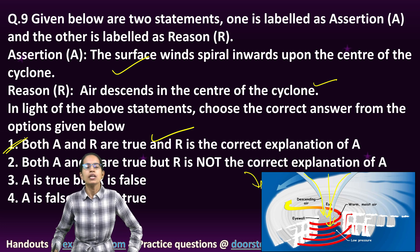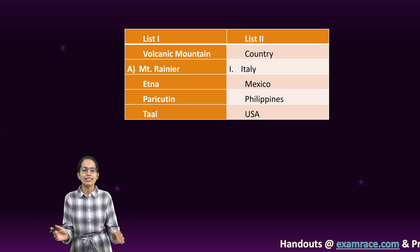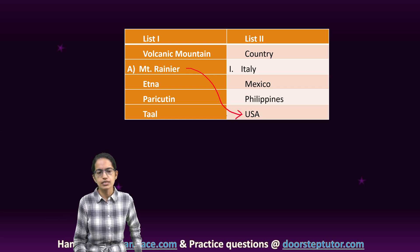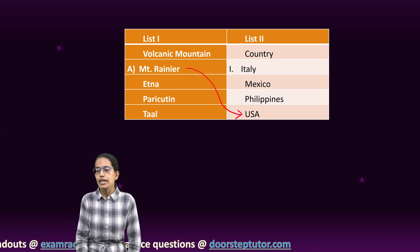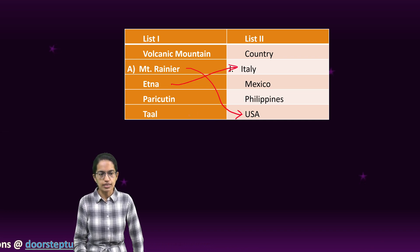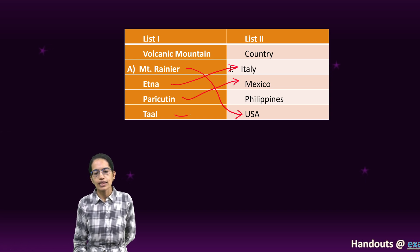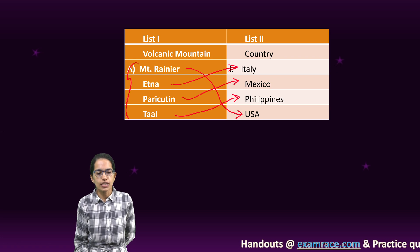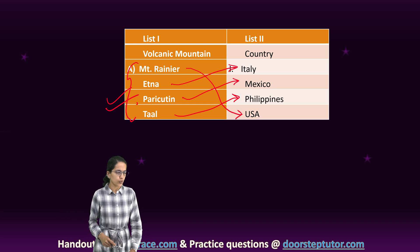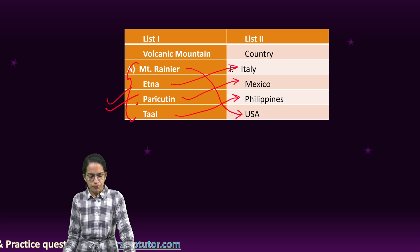In this question, you have to match the correct sets. Mount Rainier is located in Washington, United States — that's the correct answer. Etna is a stratovolcano located in Italy — correct. Paricutin is one of the volcanoes located in Mexico and Taal is located in Philippines. All four important volcanic mountains and the places where they are located is asked — a kind of direct question.